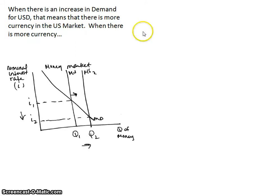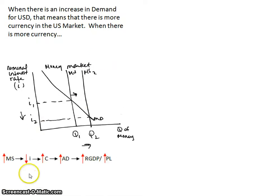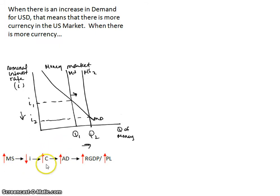First, we take a look at the money market graph — this is just the money supply. If you've got more currency floating around, you have an increase in the money supply. When you have an increase in the money supply, following the chain: you have a decrease in the nominal interest rate, an increase in consumption, and an increase in non-interest-bearing investment, which increases aggregate demand and then causes an increase in real GDP and the price level.